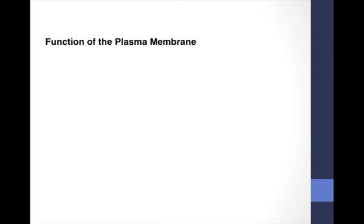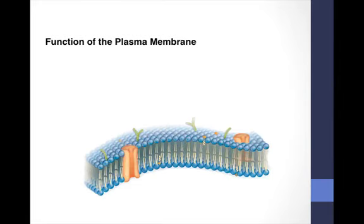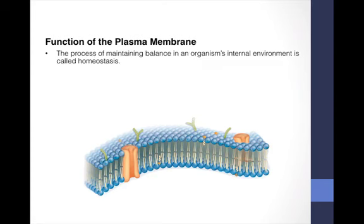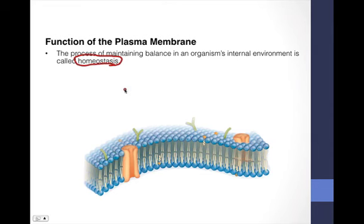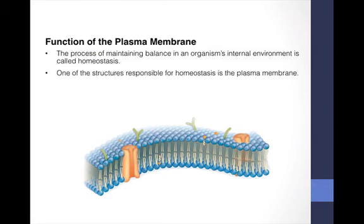The function of the plasma membrane, which is of course two layers, is number one to maintain homeostasis. One of the structures responsible for homeostasis is the plasma membrane, sometimes also known as the cell membrane.